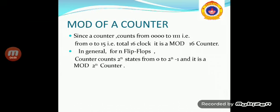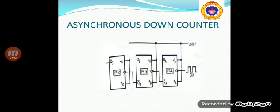That means this counter counts from 0000 to 1111 — that is, it counts from 0 to 15, with 16 different states. So this is a mod-16 counter. In general, we can say that for n flip-flops used in a counter, the counter will count 2 to the power n states, starting from 0 to 2 to the power n minus 1, and it is also called a mod-2^n counter.